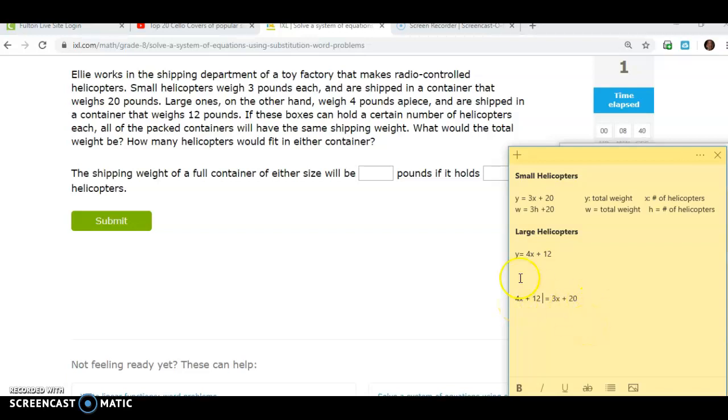Okay, so I just simply took the Y out. I'm like, well, Y is equal to this as well. So now I can go ahead and set them equal. So now since I have a variable on both sides, I'm going to subtract 3X from both sides. So I have X plus 12 on the left equals 20. Subtract 12, I get X equals 8.